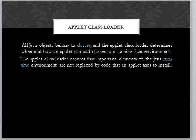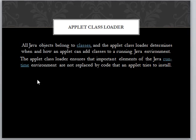The second pillar of Java Sandbox Model is the Applet Class Loader. Whenever all Java objects belong to a class — as we all know — the Applet Class Loader determines when and how an applet can add classes to a running Java environment. The Applet Class Loader ensures that important elements of the Java runtime environment are not replaced by code that an applet tries to install. The Java Class Loader ensures that the runtime environment's important source code cannot be replaced.